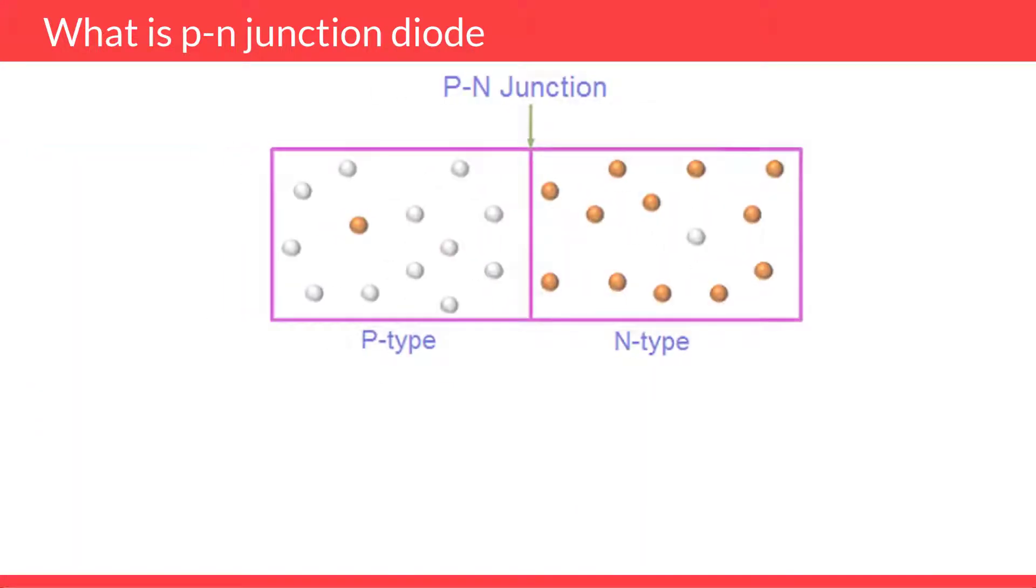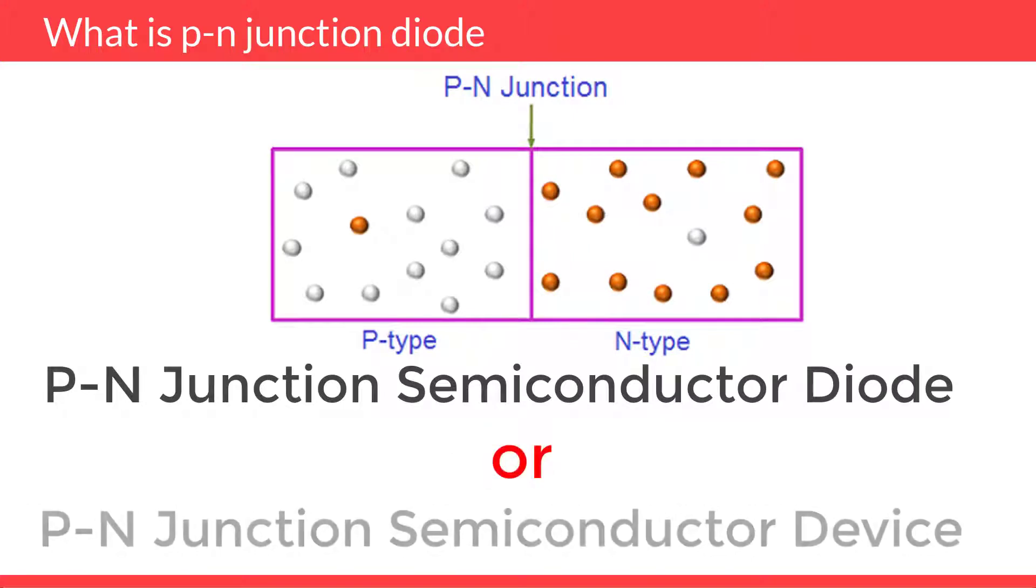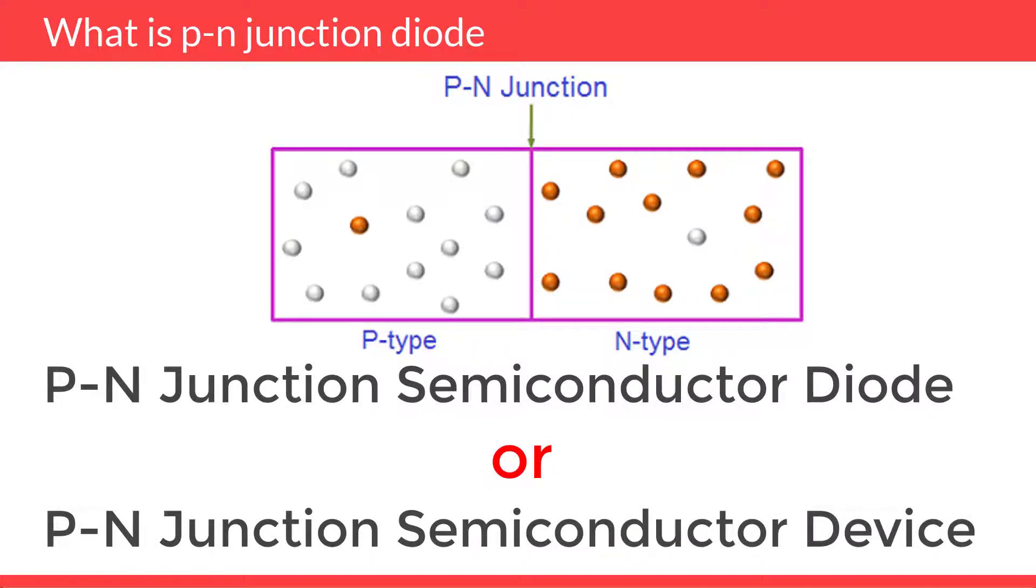PN Junction Semiconductor Diode is also called PN Junction Semiconductor device.